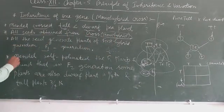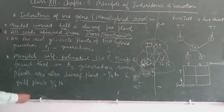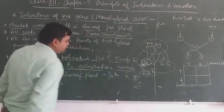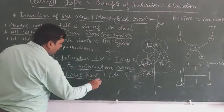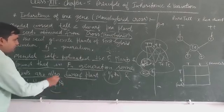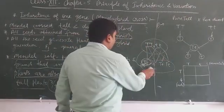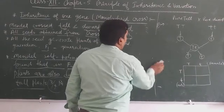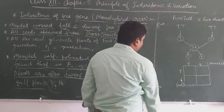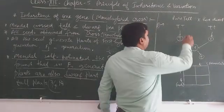After that, Mendel self-pollinated the young one plants and found that in the second generation, some plants are also dwarf. One-fourth plants are also dwarf and tall plants are three-fourths. Mendel takes one tall plant that is tall or tall and one dwarf or dwarf.